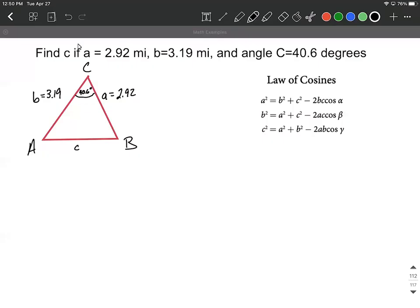Our goal on this is to find side length c if we know that a is 2.92 miles and b is going to be 3.19 miles, and then we have an angle C that's going to be 40.6 degrees.